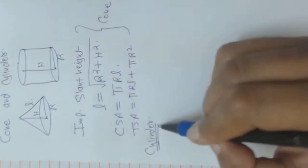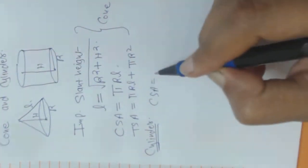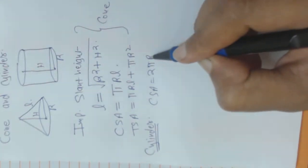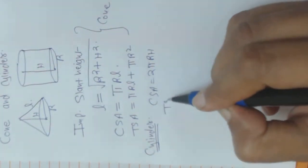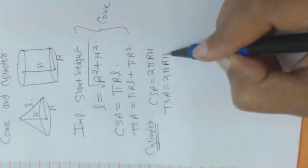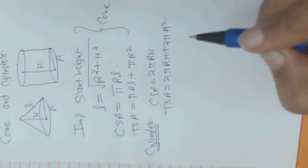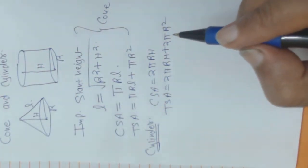These things are for cone and for cylinder it is simple. CSA is 2 pi R H and TSA is 2 pi R H plus 2 pi R square.